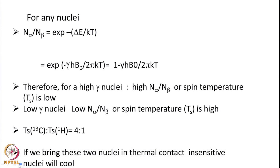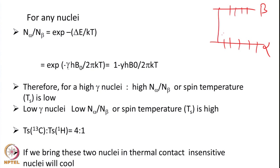Essentially, sensitivity is given by the difference in population between the ground state and excited state — alpha state and beta state. A nucleus will be called sensitive if the difference is more: more particles in alpha state, fewer in beta. This depends on the energy gap delta E between the two states and also on temperature T. Since T is generally ambient temperature, in NMR the difference between N_alpha and N_beta is comparatively quite small.